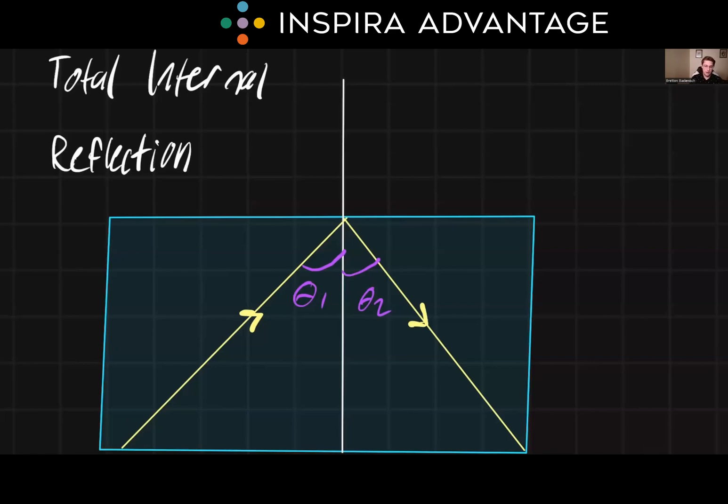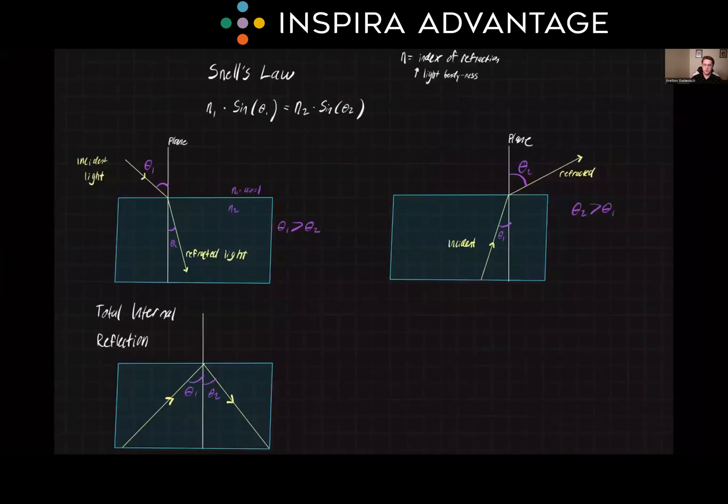Important to know for the MCAT is that Snell's law applies to light passing through any type of material, whether it's solid, liquid, or gas, and it's a very important concept for understanding the behavior of light in different medias. Snell's law is an essential concept for understanding the behavior of light in different materials, and it is an important topic for the MCAT.